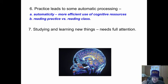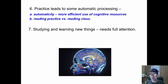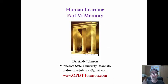Practice leads to some automatic processing, called automaticity, allowing you to use your cognitive resources more efficiently. For example, when driving a car, most of that has become automatic — we don't have to attend to shifting, pressing pedals, and so on. In terms of reading, we should call it reading practice, not reading class, because we need more practice to make the processes of creating meaning with print automatic. Studying and learning new things takes our full attention.